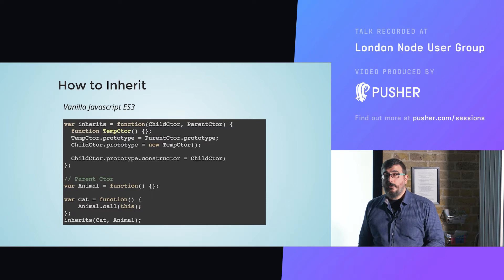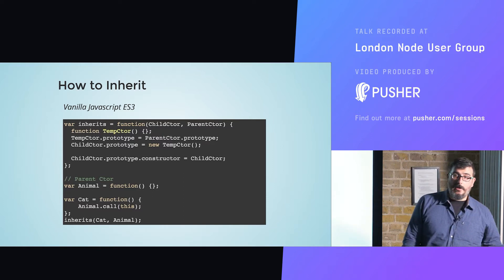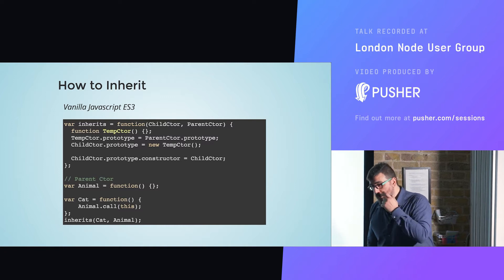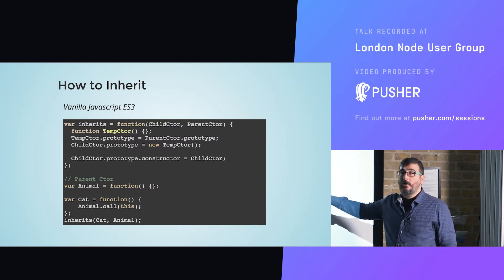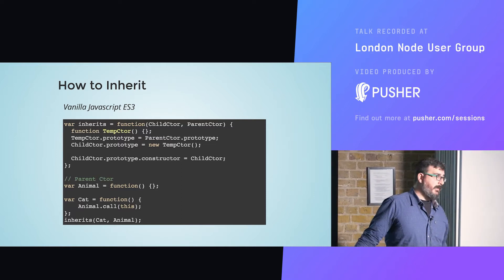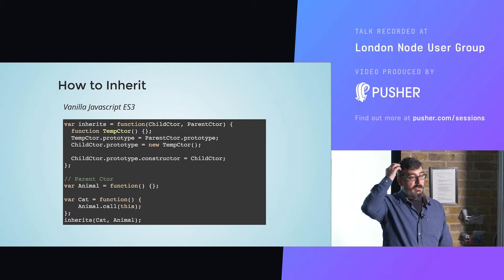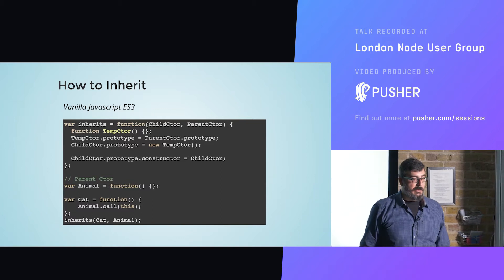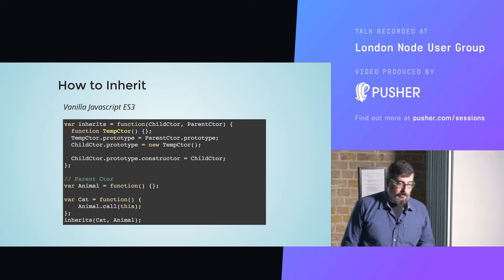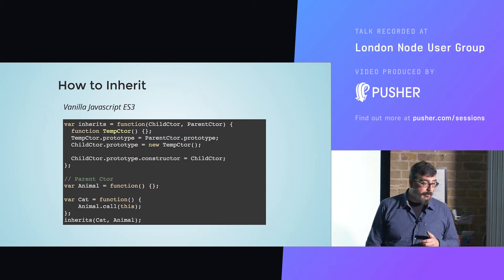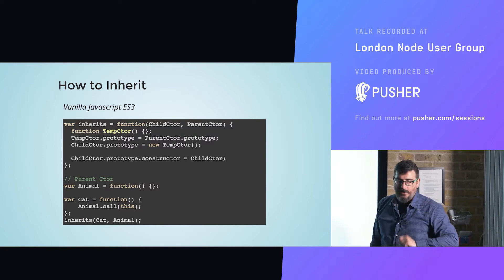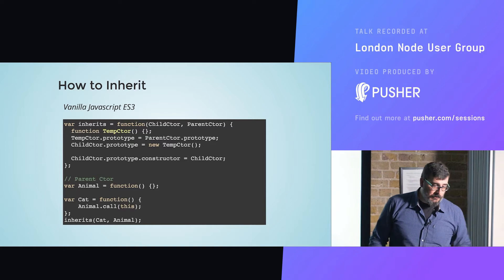What happened before ES5? We had ES3, and Object.create doesn't exist in ES3. This is the lowest common denominator for inheritance in JavaScript — this is how we did inheritance in JavaScript in 2010 and 2011, before we got Object.create and all of those goodies. There are a lot of crazy things going on here that we are going to analyze later on.